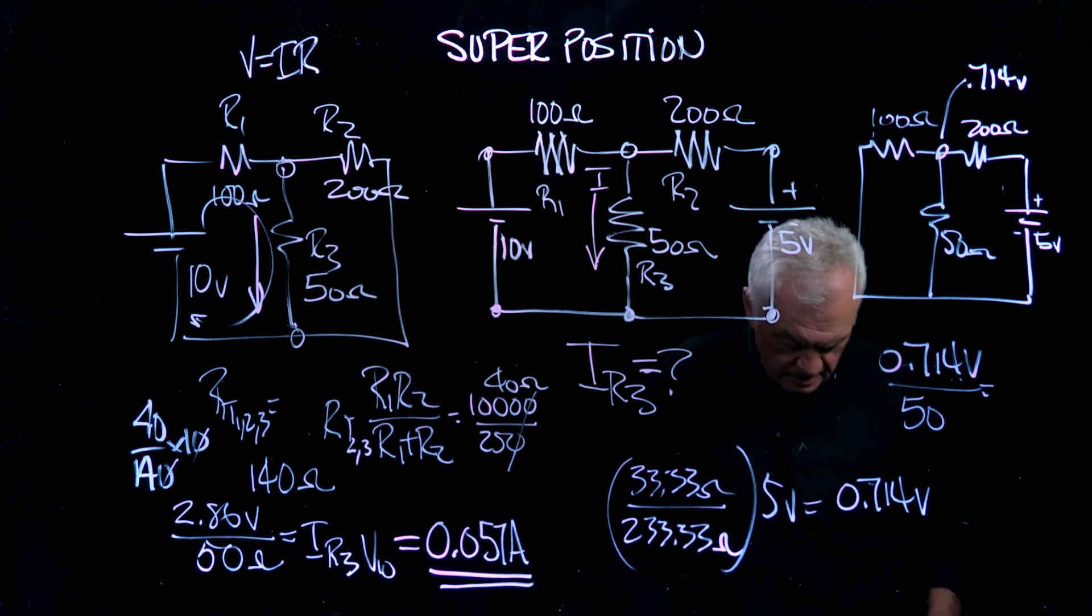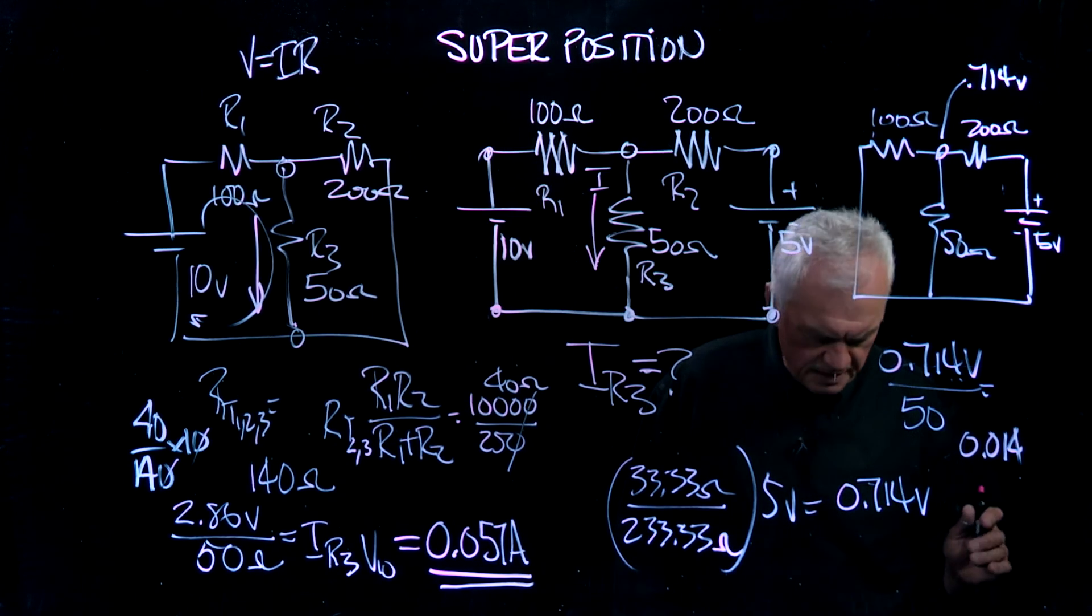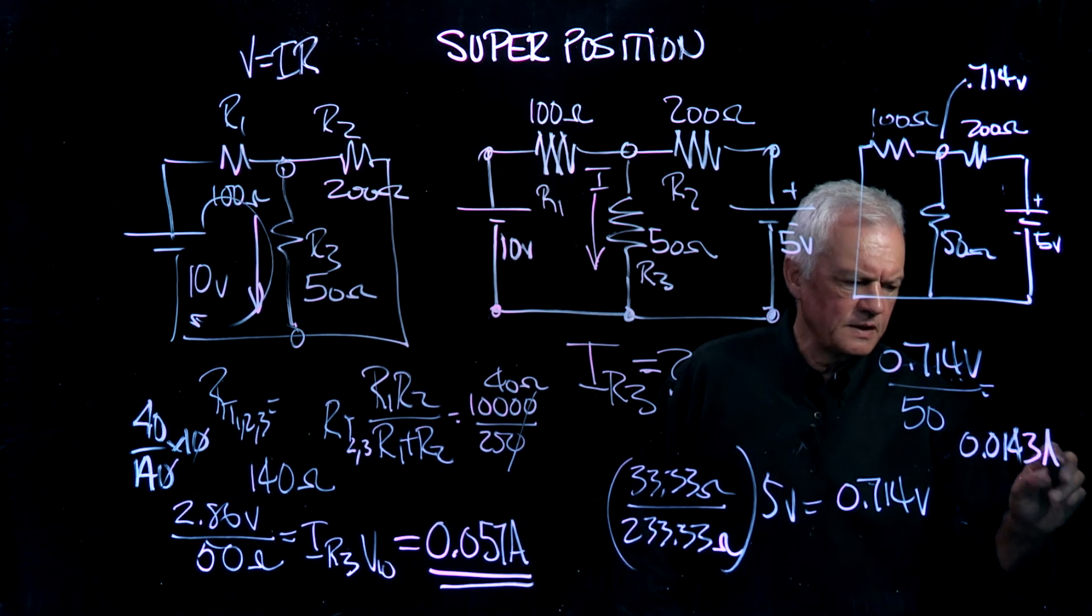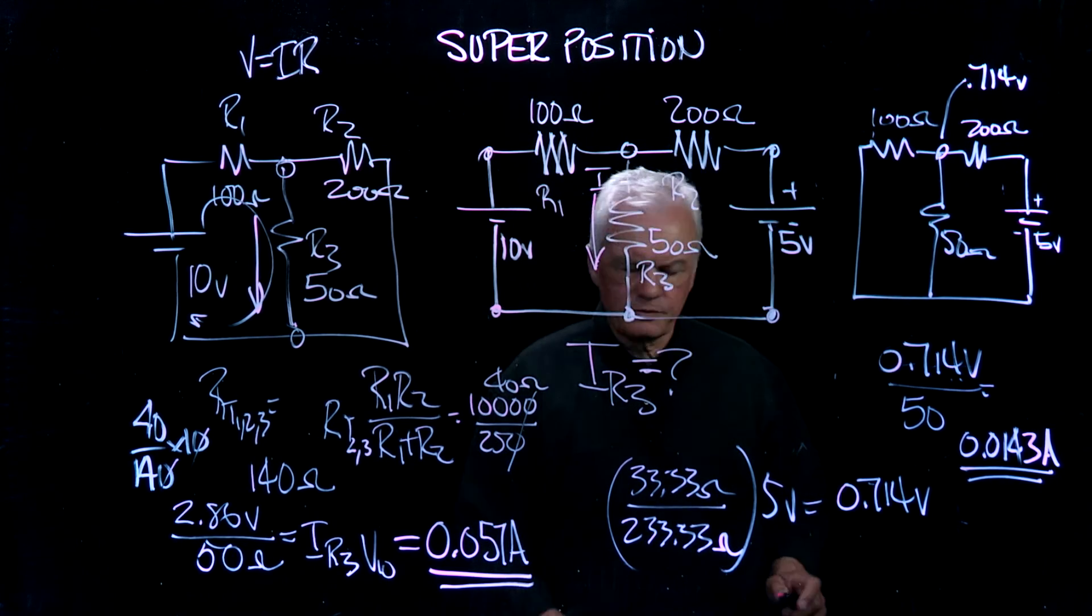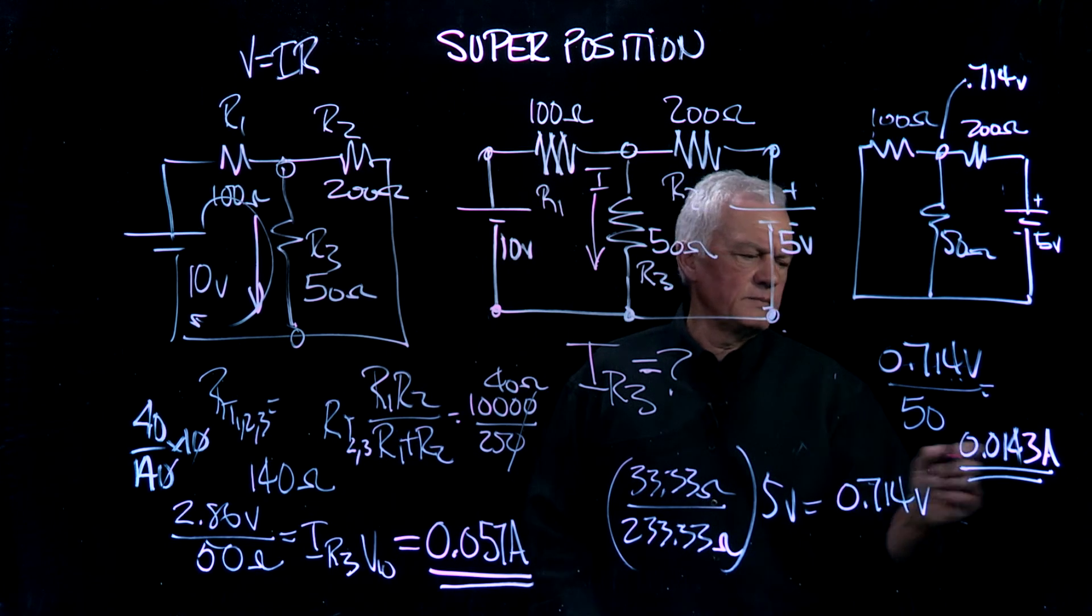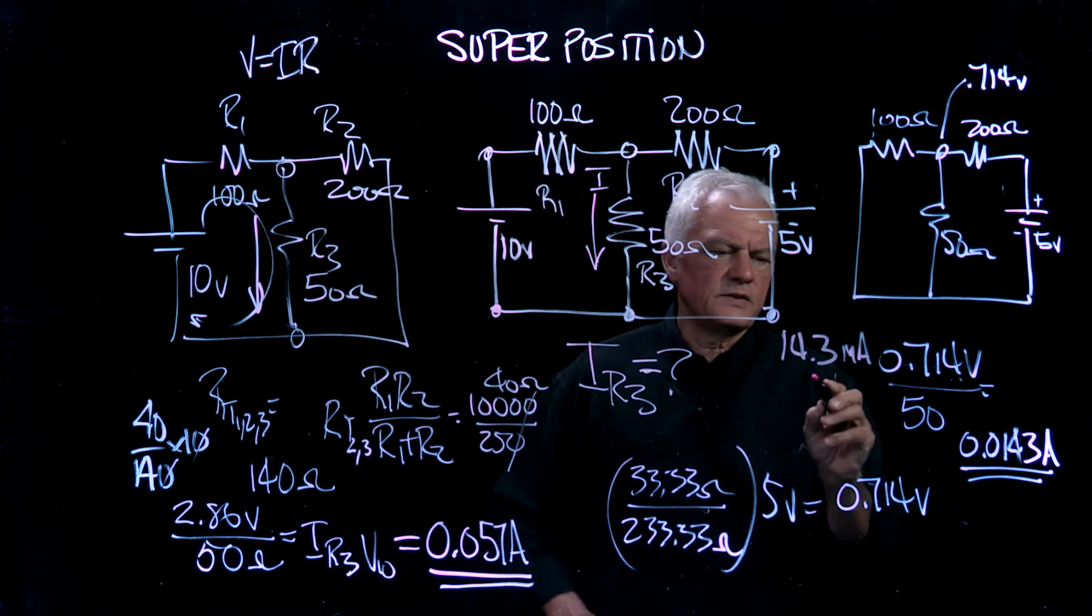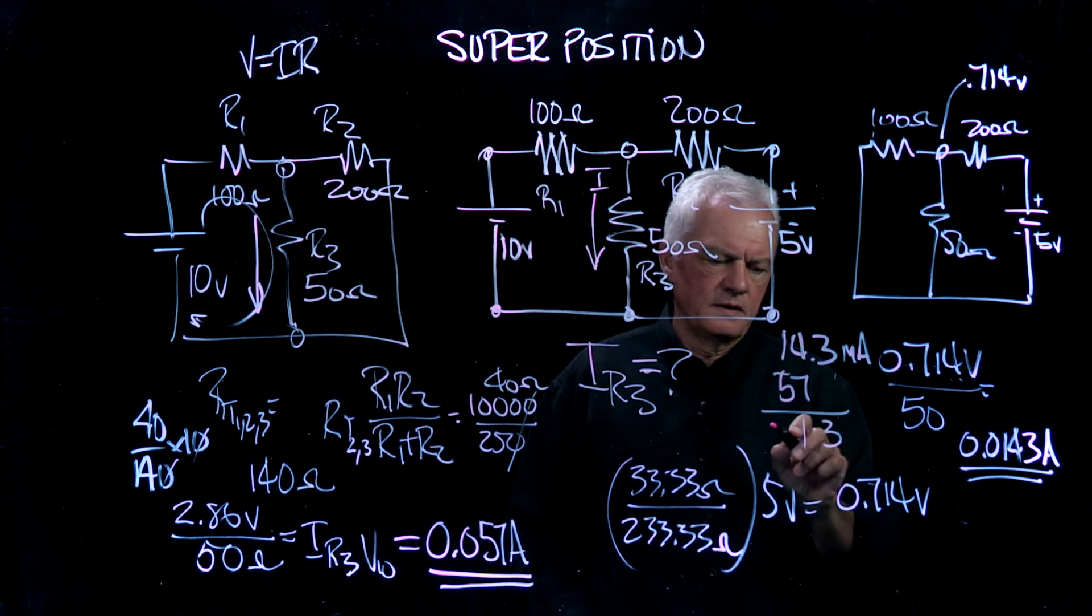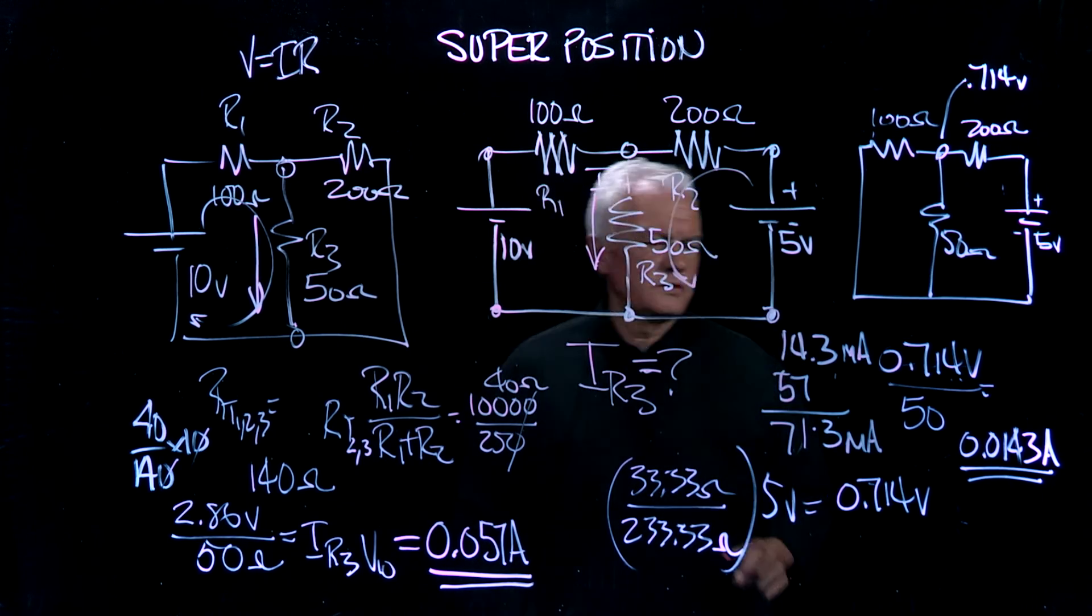You need to check my math because I'm trying to do some of this in my head. This is the contribution from the 5 volts, and this is the contribution from the 10 volts. So we've got, let's just do it in milliamps, 14.3 milliamps and we've got 57 milliamps. So our total current is 71.3 milliamps as a result of the two sources.